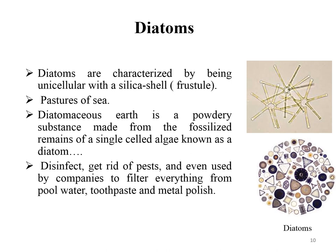Diatoms are characterized by being unicellular with a silica-based shell called a frustule. They are photosynthesizers found in both fresh and salt water and are important to the marine food web — they have been called the 'pastures of the sea.' Diatomaceous earth is a powdery substance made from the fossils of diatoms. It can be used as a disinfectant, to get rid of pests, and by companies to filter pool water, toothpaste, and metal polish.